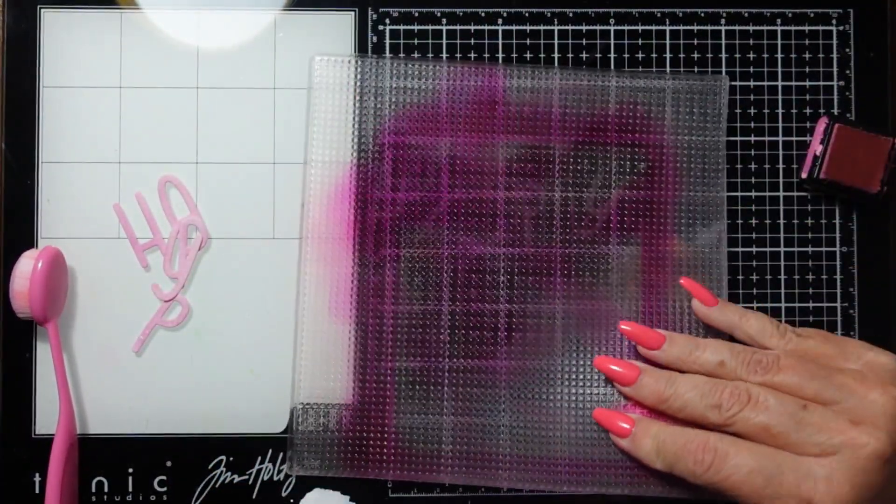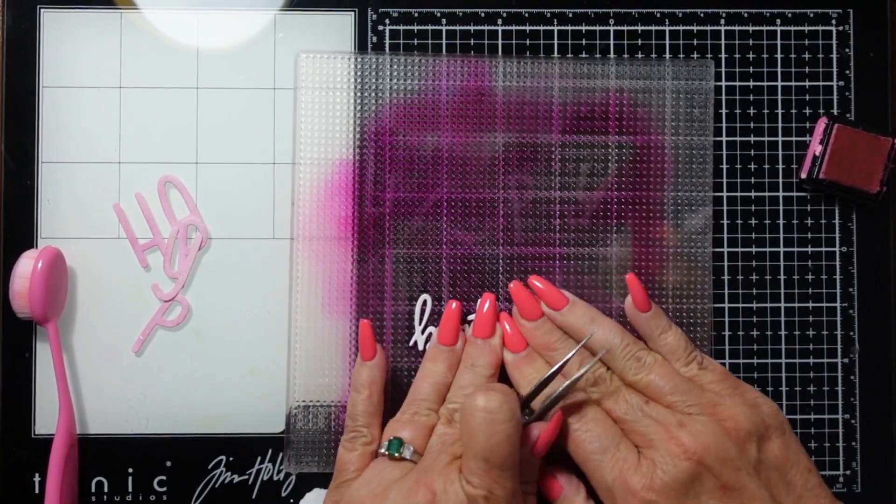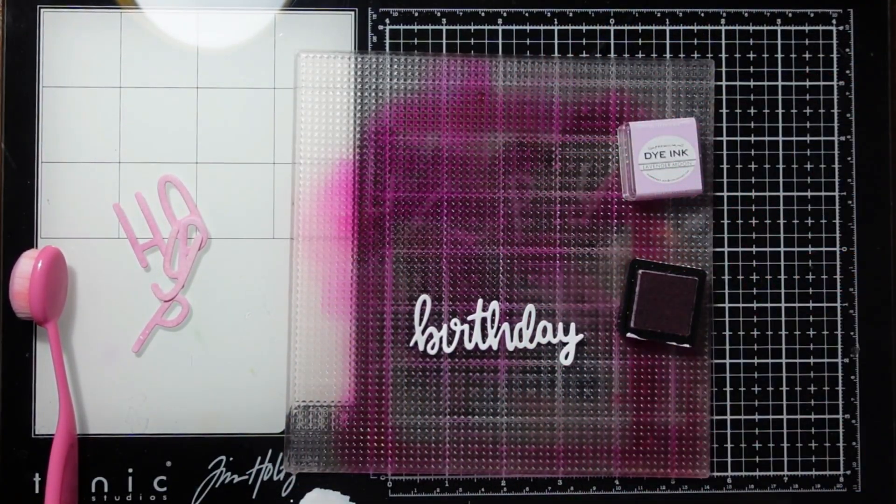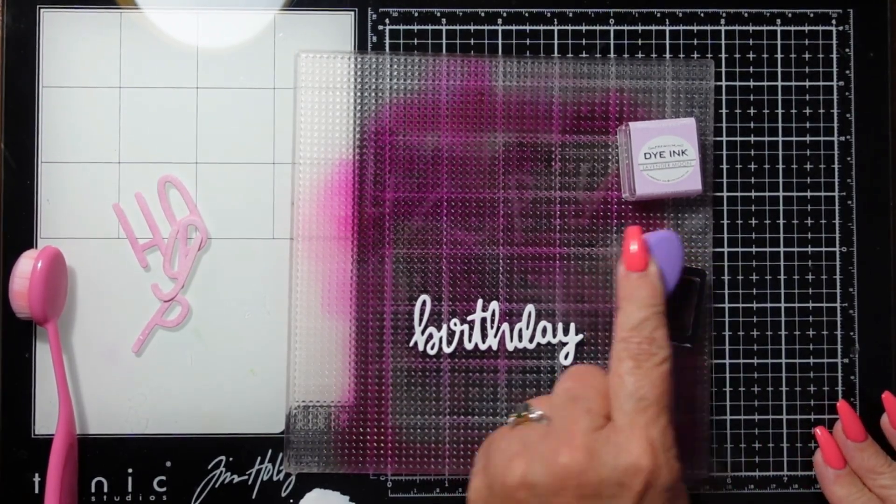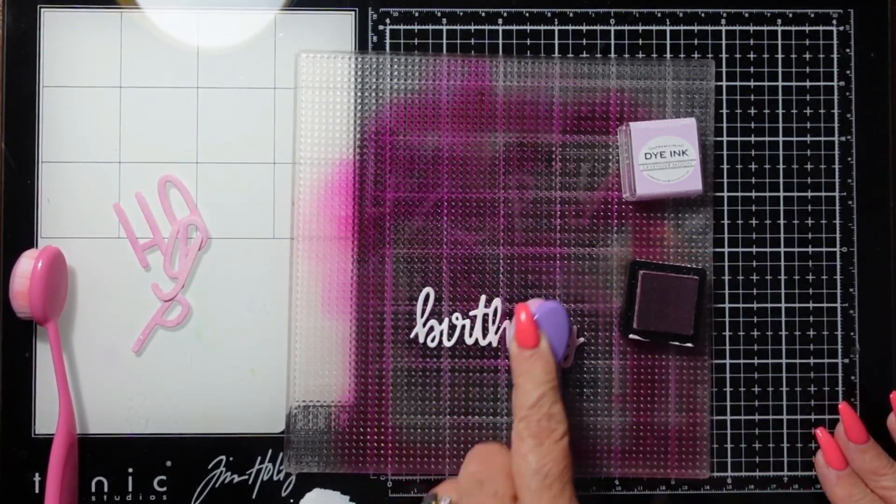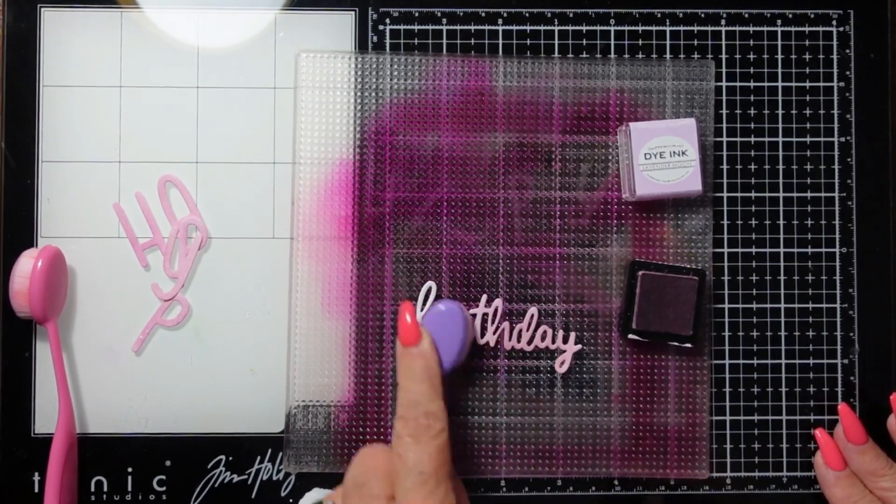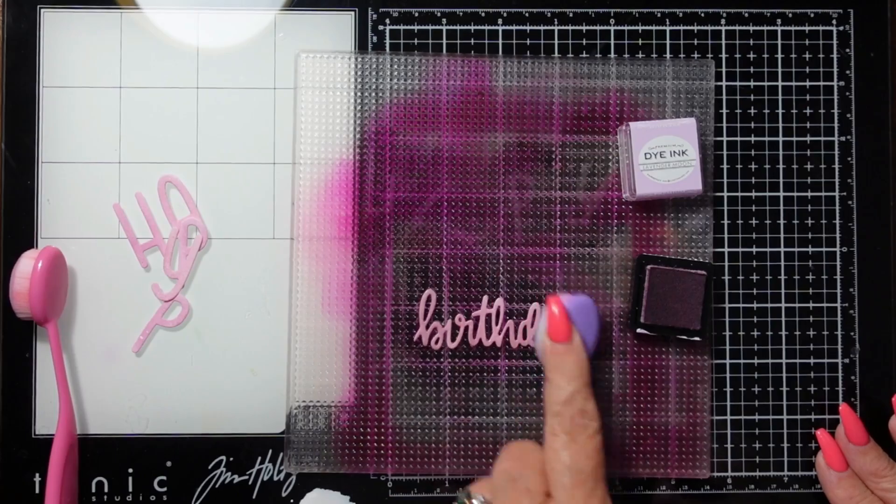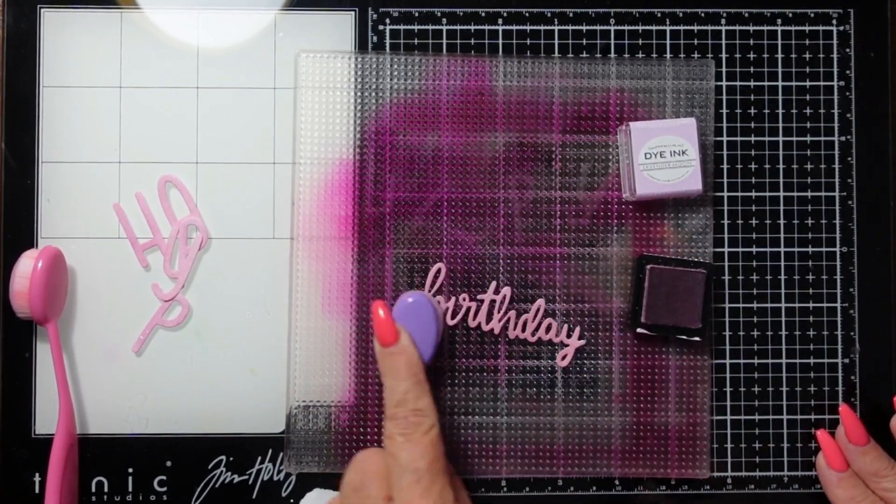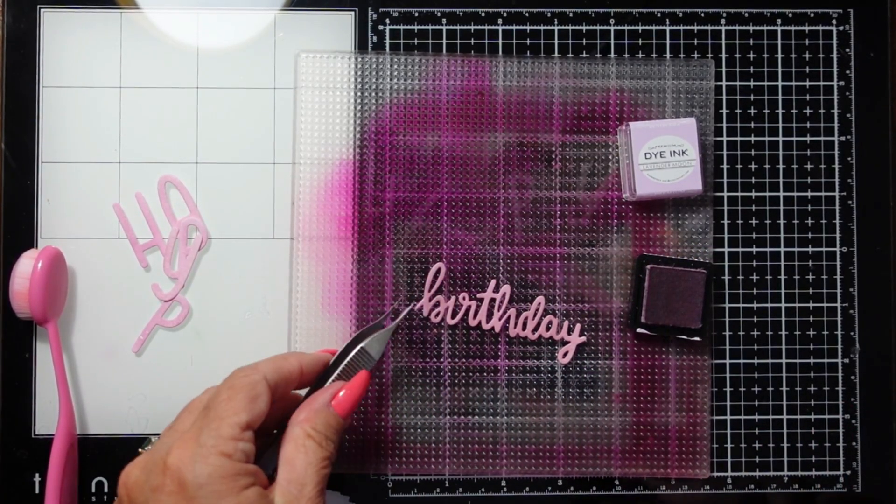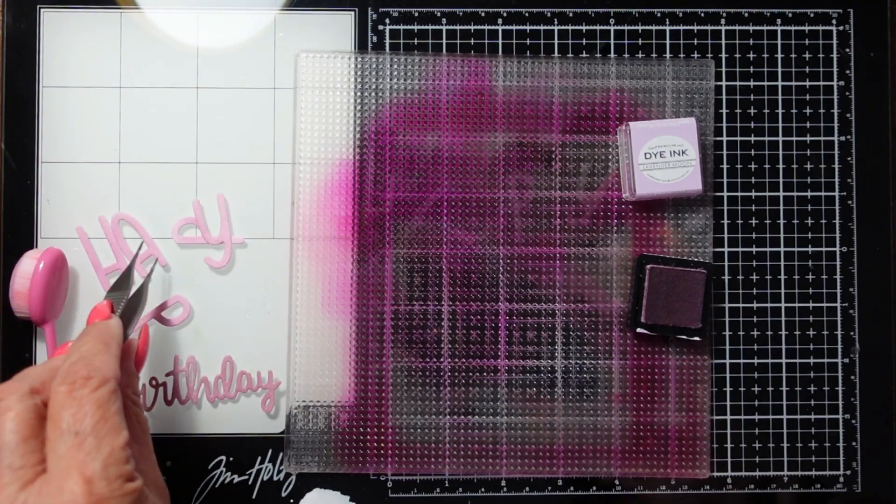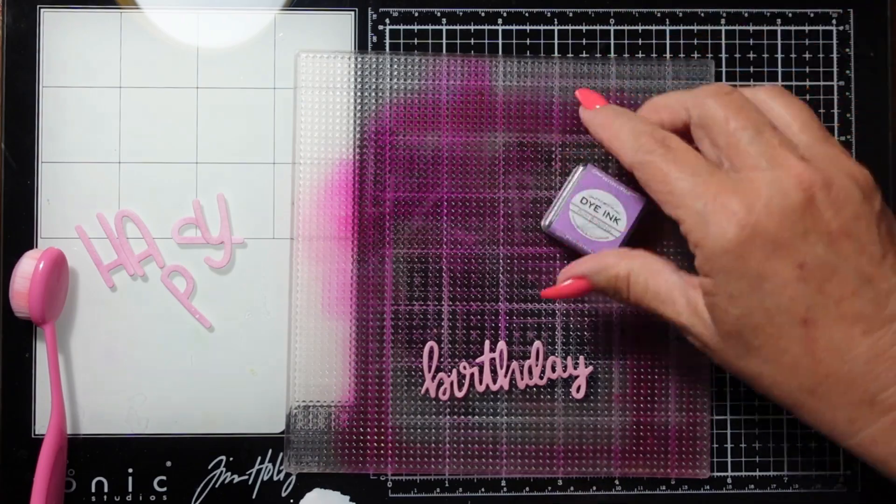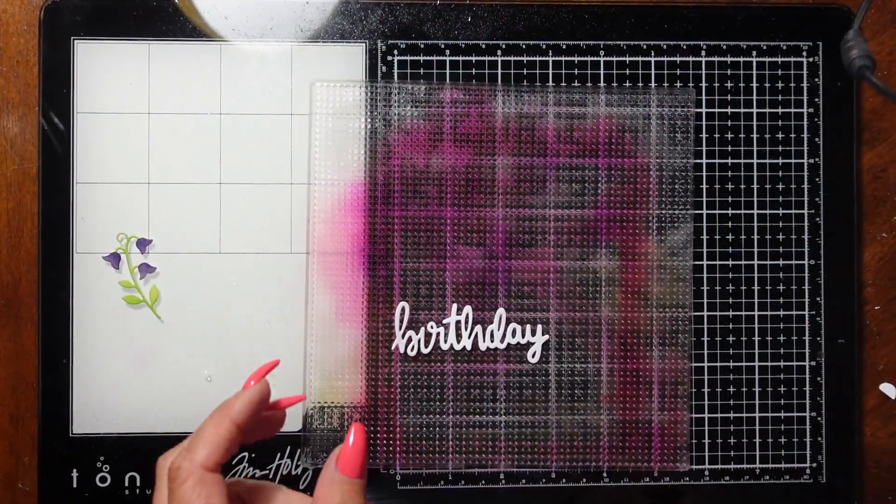Moving on to the word Birthday, I'm going to add a lavender purple to the whole die cut. This is going to have a little bit of that pink undertone. Once I finish with the lavender, I'm going to bring in a darker purple for the bottom, creating a gradient going from mid-tone pink to darker vibrant pink, light lavender, then darker purple.